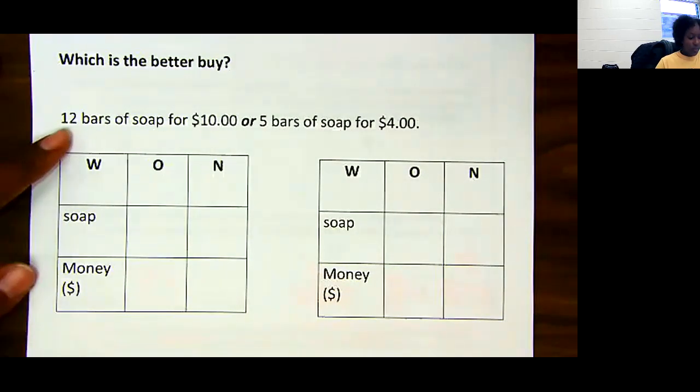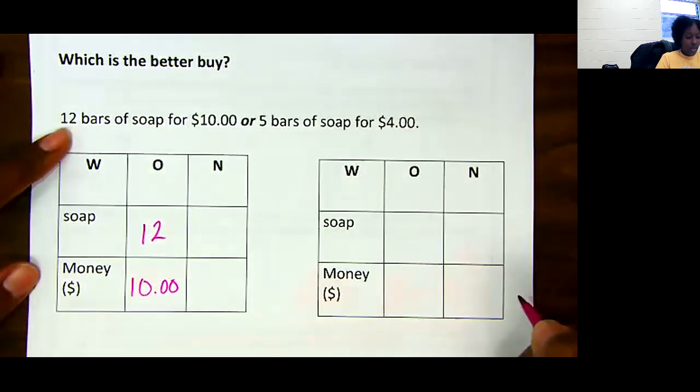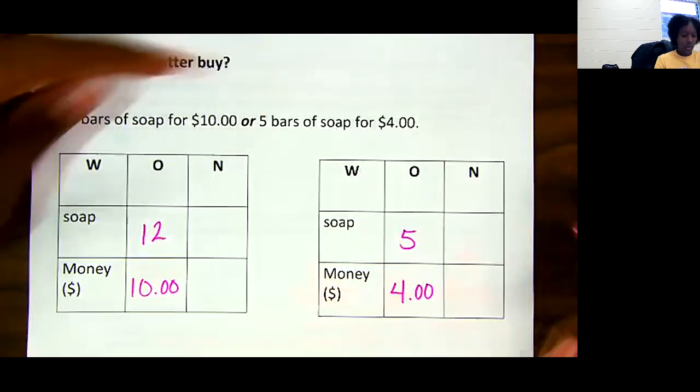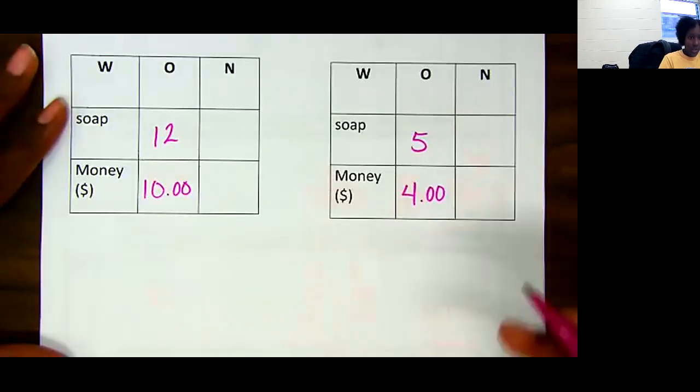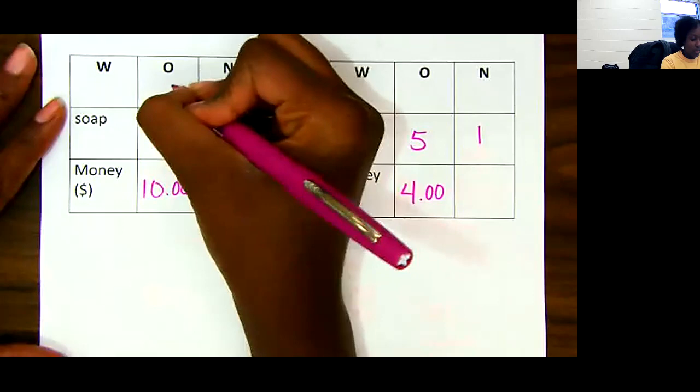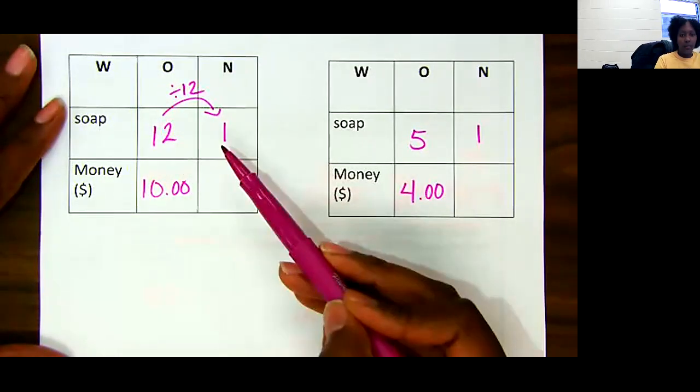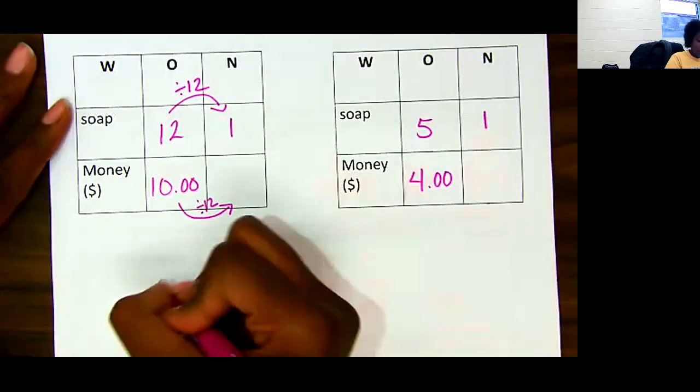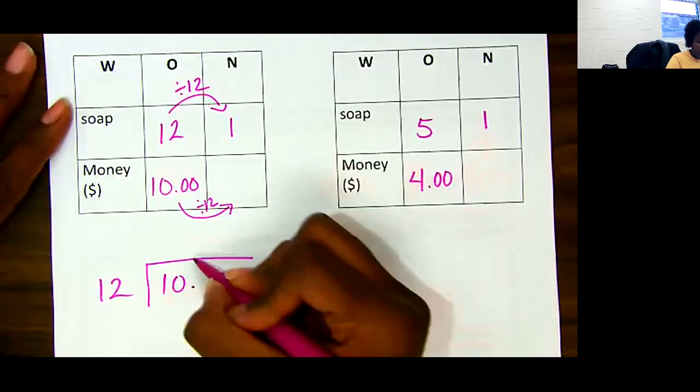So let's look at the first one. I have 12 bars that cost $10, or I have 5 bars that cost $4. They want to know which one's the better one to buy. We have to figure out how much it is for one bar of soap to figure out which one's the better buy. So let's start with this one. In order to get to one, I have to divide by itself. 12 divided by 12 is one. Therefore, I have to do the same to this. So I have $10 divided by 12. Remember, you have a decimal, so make sure you bring that up.